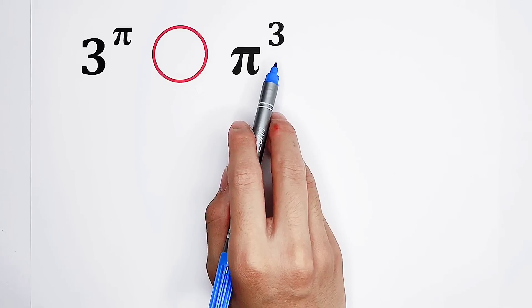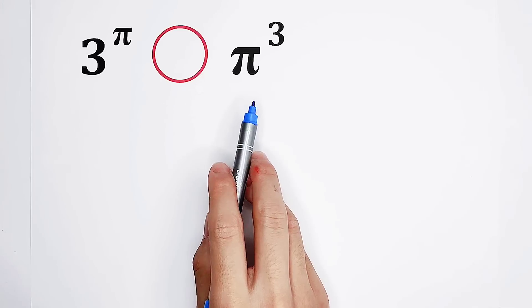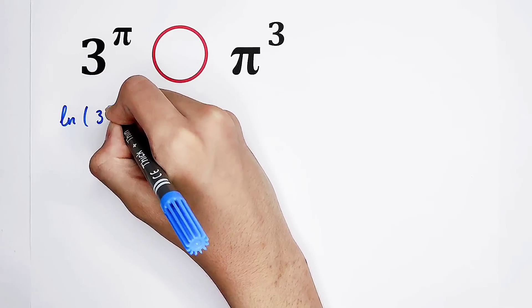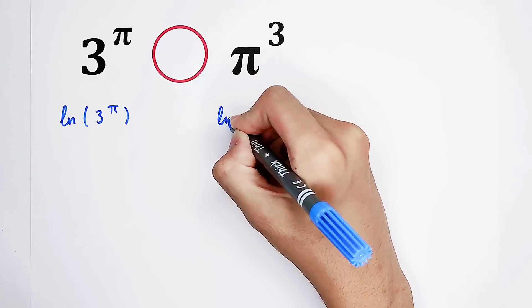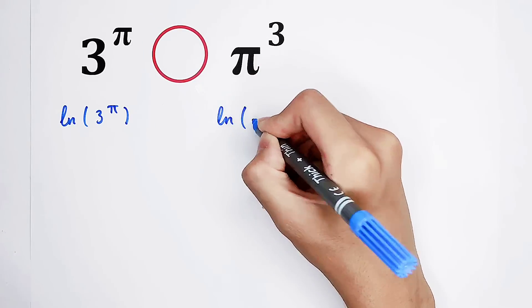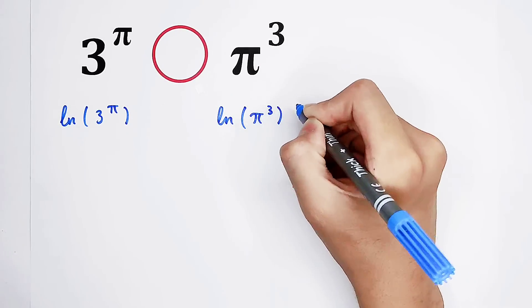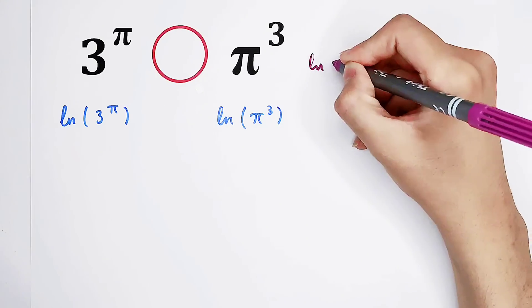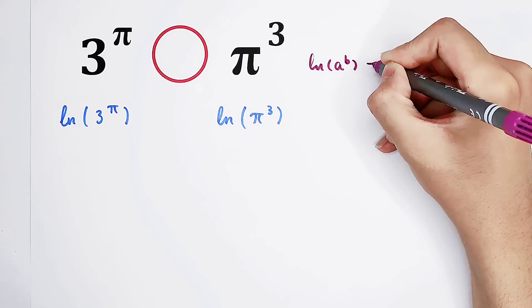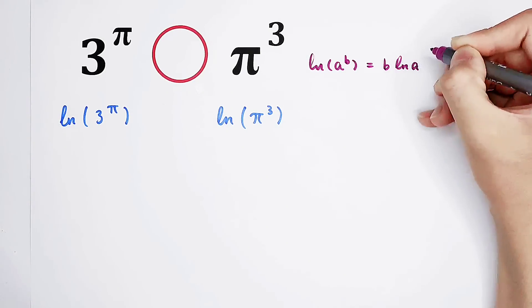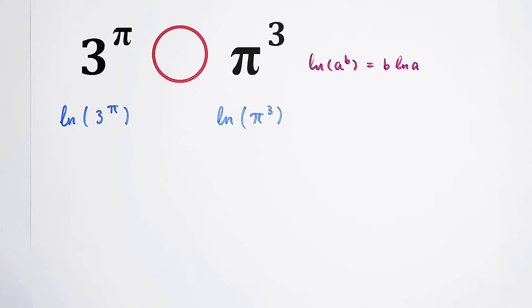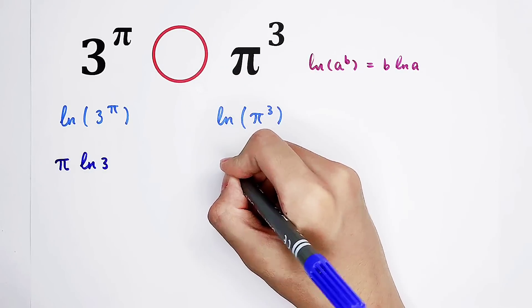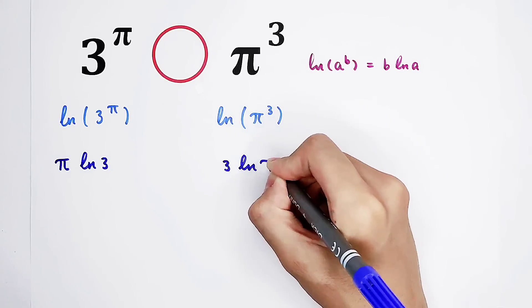What we can do is take the natural log on both sides. We have the formula: the natural log of a to the power of b equals b times the natural log of a. So this is pi times the natural log of 3, and this is 3 times the natural log of pi.